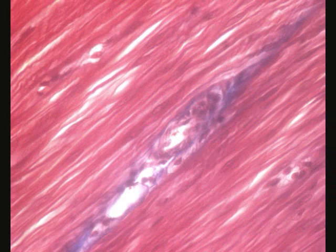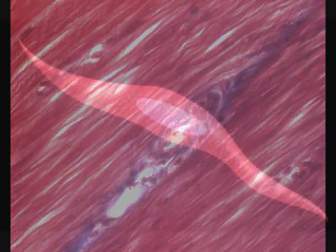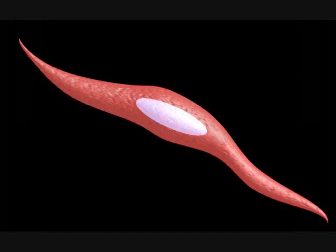Smooth muscle is non-striated and involuntary muscle whose cells are spindle-shaped with a single nucleus. Each cell contains thick and thin myofilaments but not arranged into sarcomeres. This permits the walls of hollow organs to stretch without increasing the tension within the cells.